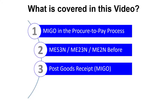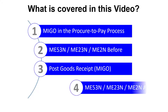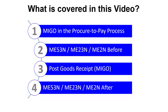We'll then post a goods receipt against a purchase order in SAP using transaction MIGO. And finally, once the goods receipt has been posted, we'll again review the status of the purchase requisition using transaction ME53N, Display Purchase Requisition, and the status of the purchase order using transaction ME23N, Display Purchase Order, and transaction ME2N, Purchase Orders by PO Number.